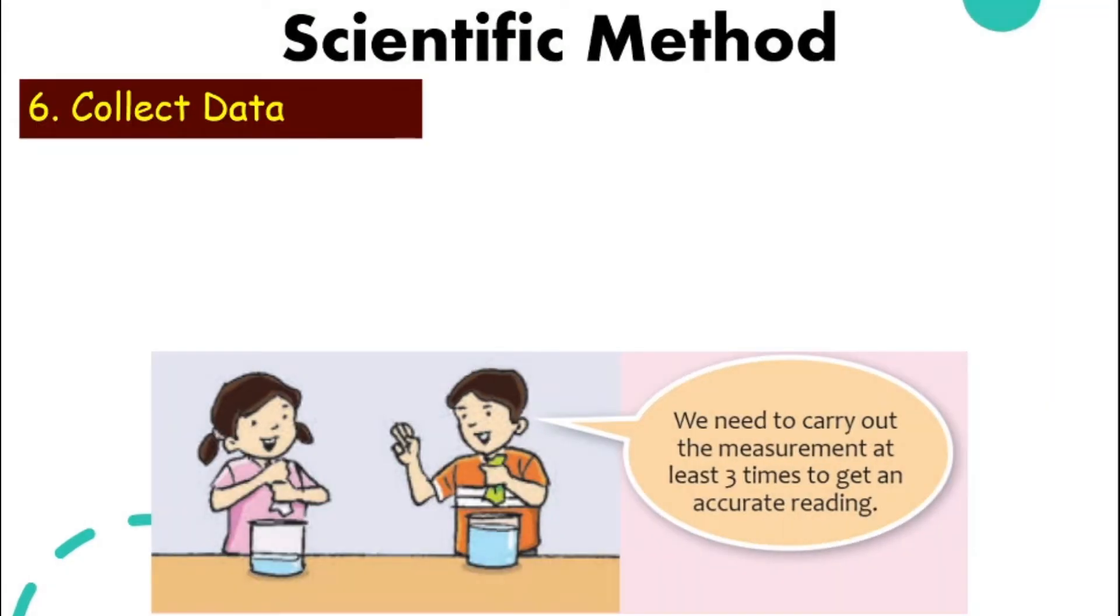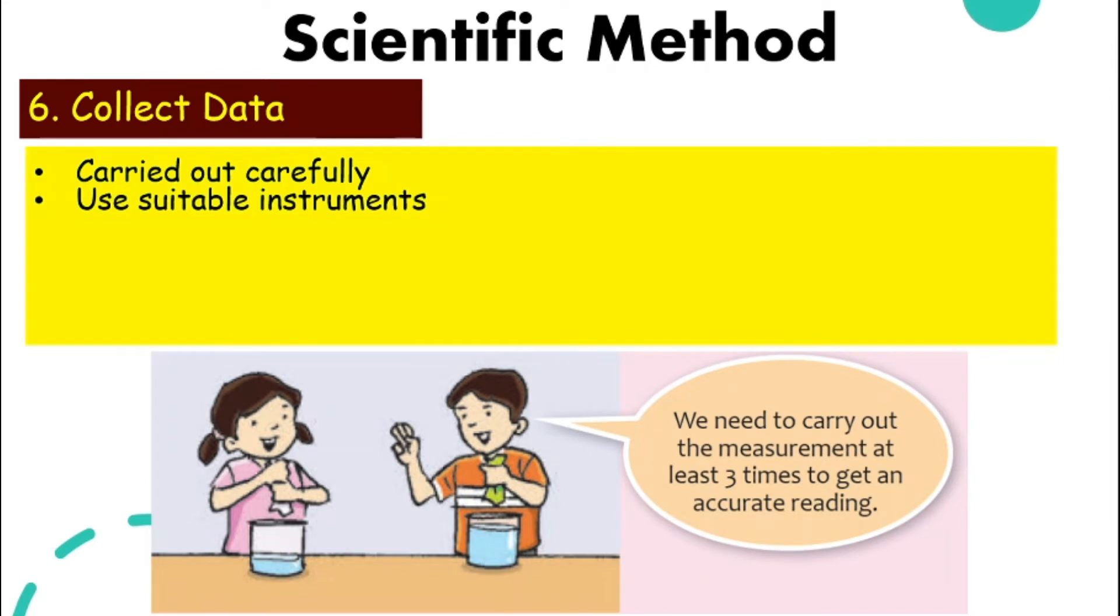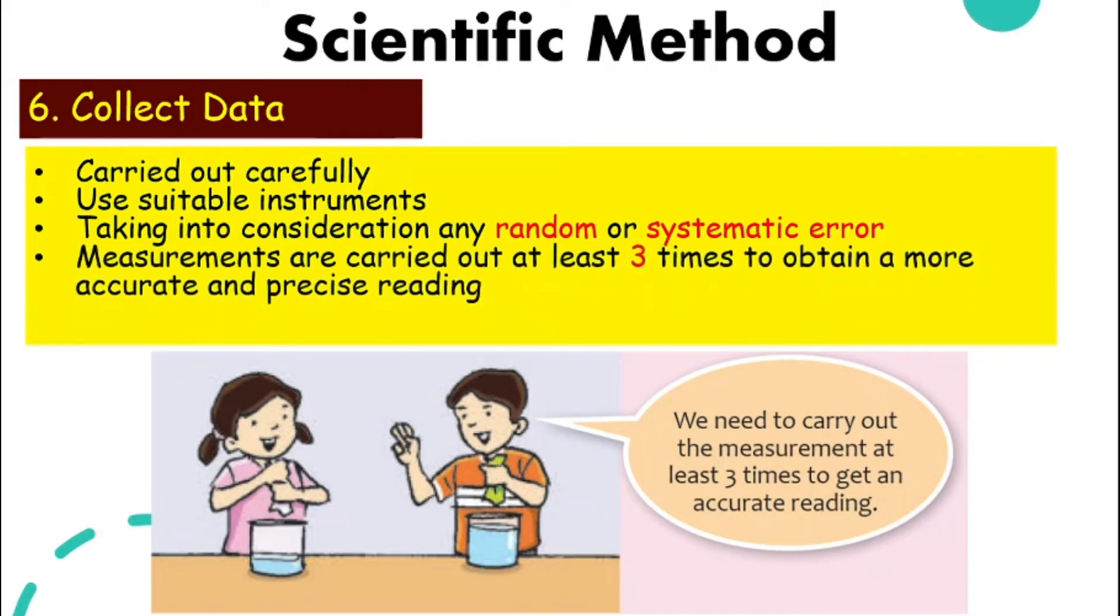And then we collect data. After you immerse your tissue and your cloth in the water, we squeeze them out and we measure, and then we have our data. It needs to be carried out carefully and we need to use the suitable instruments, taking into consideration if there's any random or systematic error. Remember, we talked about this in 1.4. You can scroll back to look for the previous videos.